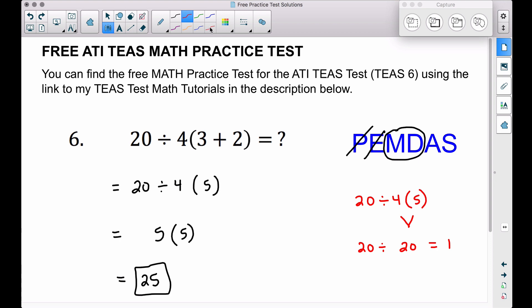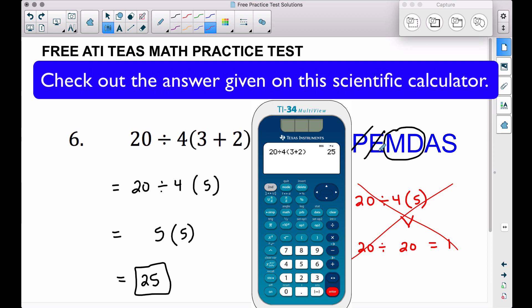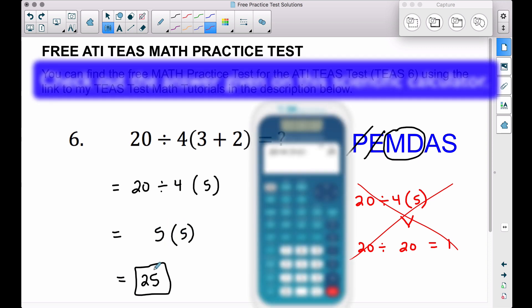This is not correct because this is going to give you an answer of 1. That is not how we perform order of operations. Multiplication and division is performed from left to right. That is why I divided first since that was the first operation I saw, and then we multiplied.